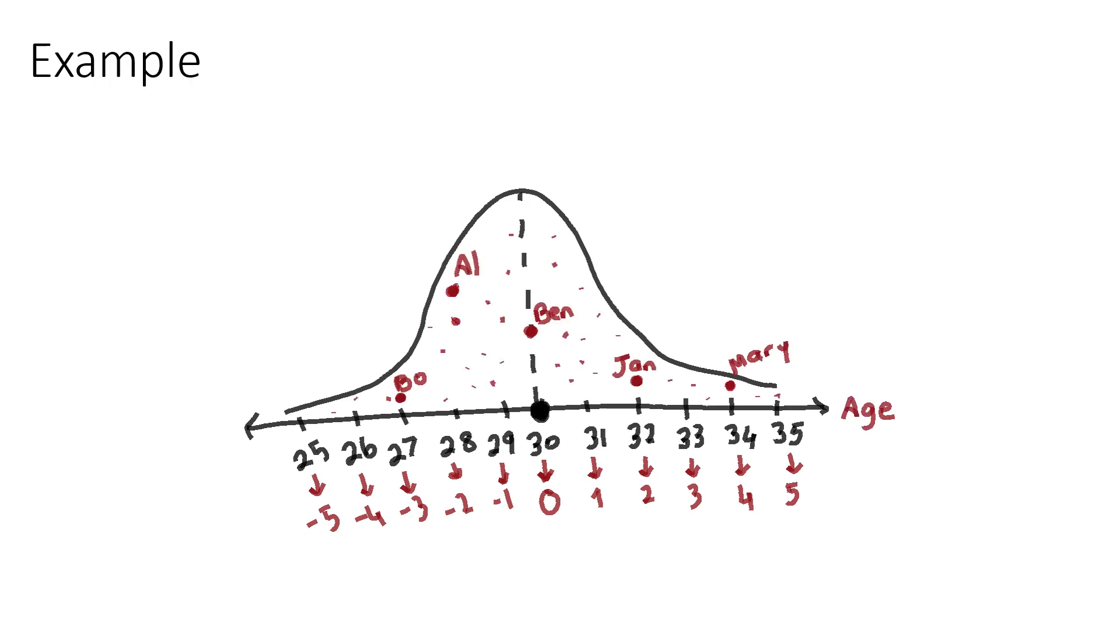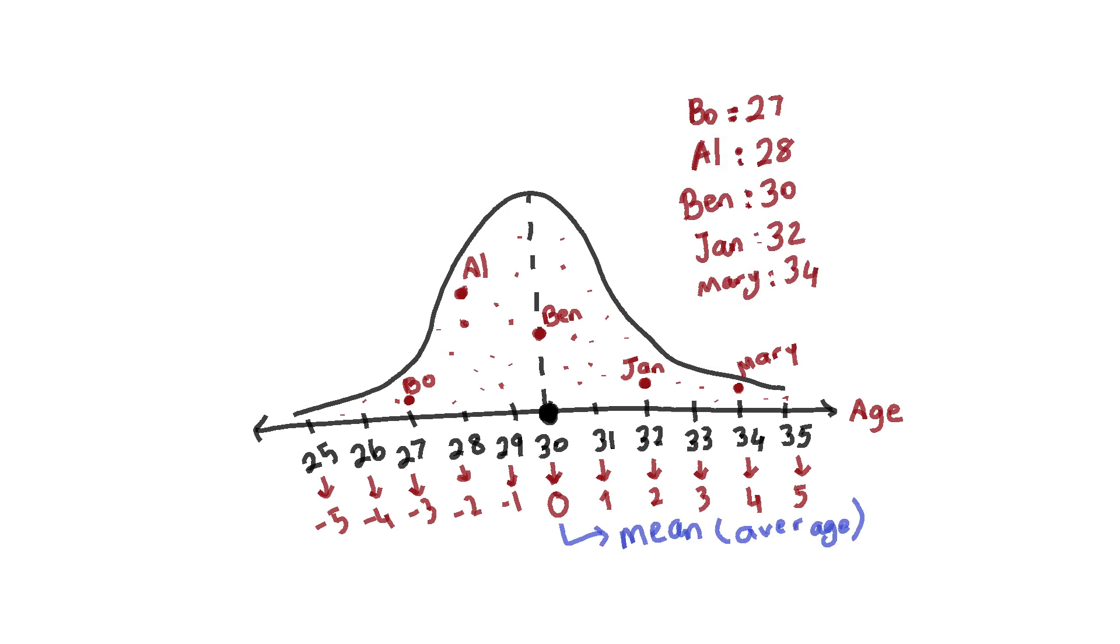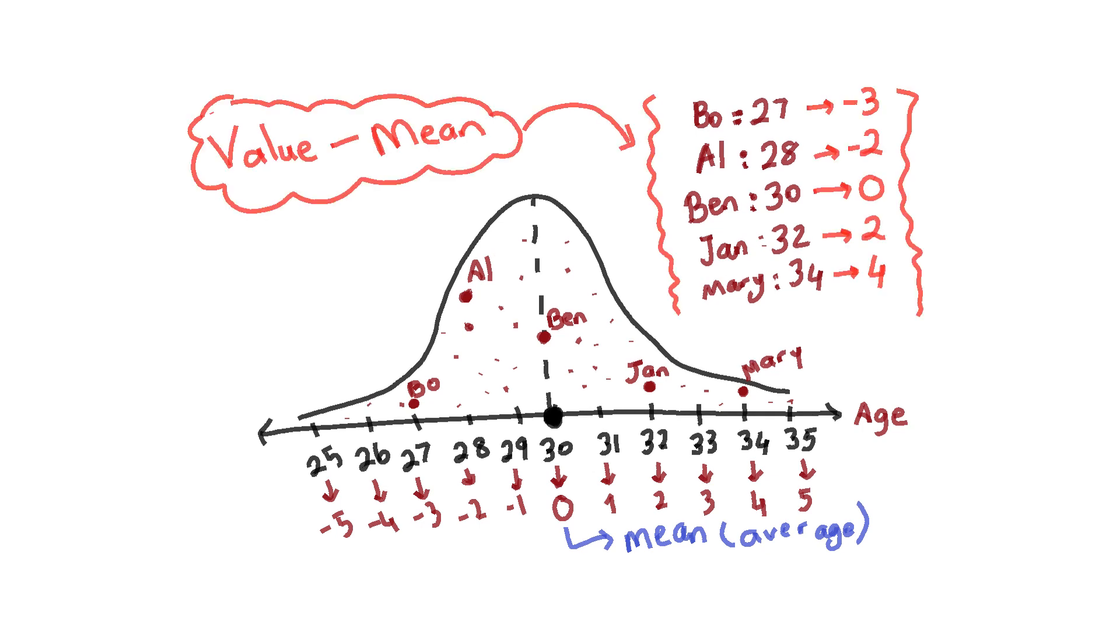Let's do an example. We have age data here where the mean or the average is 30. And we have Bo, Al, Ben, Jan, and Mary in our data set. And their values or their ages are Bo is 27 years old, Al is 28, Ben is 30, Jan is 32, and Mary is 34. So let's do the centering for these people.